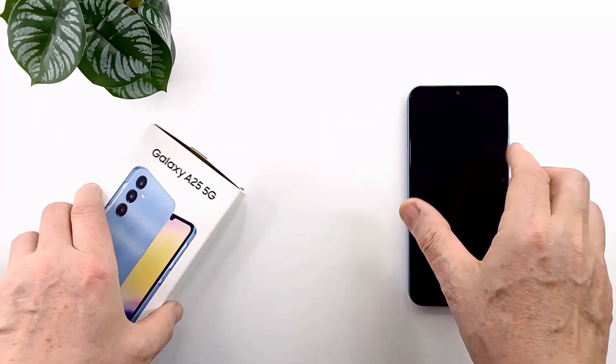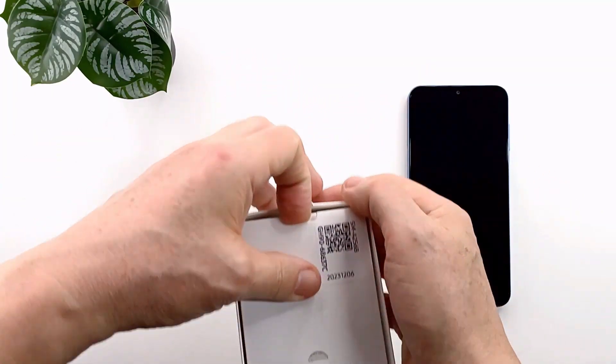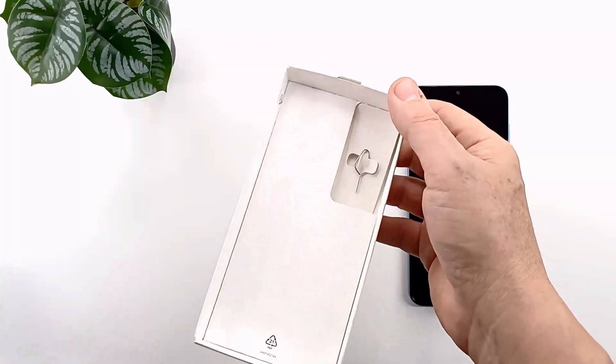The SIM tray is located on the right side of the phone. To insert the SIM cards, first remove the SIM tray. The ejector tool you will find in the box of your phone.